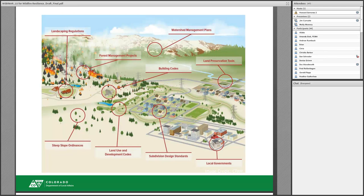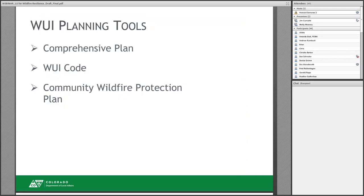One program my company implements is the national Community Planning Assistance for Wildfire — CPAW — program. We work in partnership with a nonprofit called Headwaters Economics to offer free technical WUI planning services to communities, grant-funded by the Forest Service and private foundations. To date we've worked with about 18 communities across the country. We typically start our planning process by showing a graphic highlighting WUI planning tools in our arsenal — landscaping regulations, building codes, subdivision design standards, land development codes. Our primary planning objective is to reduce risk to the built and natural environment so that wildfires can occur on the landscape without becoming a disaster.